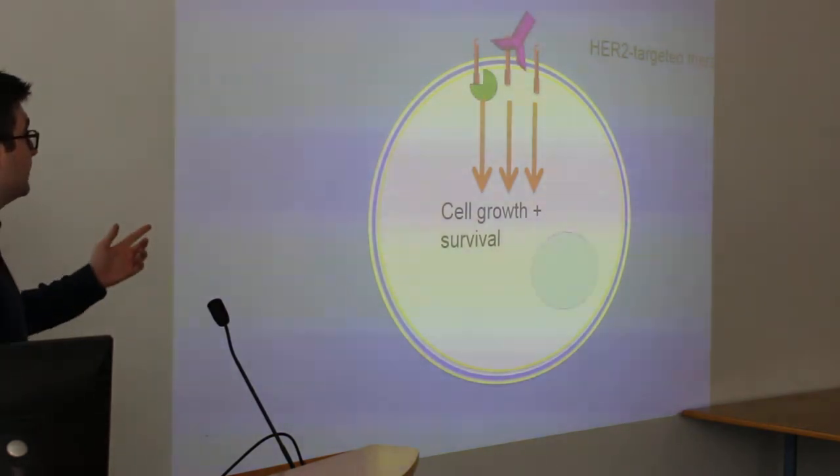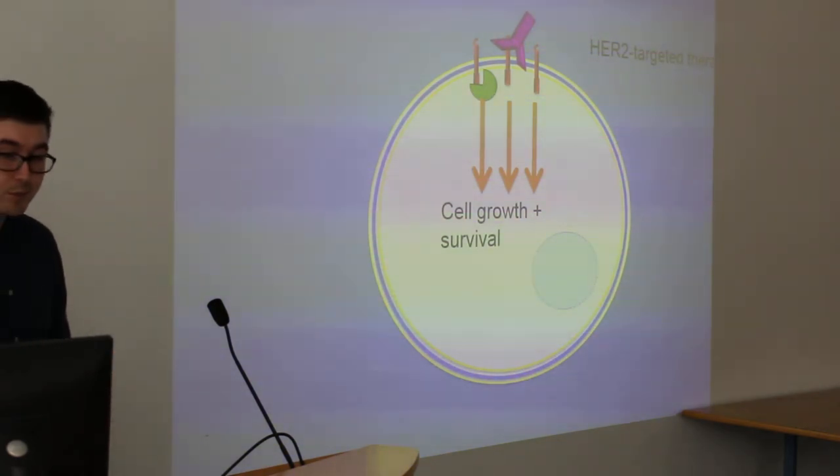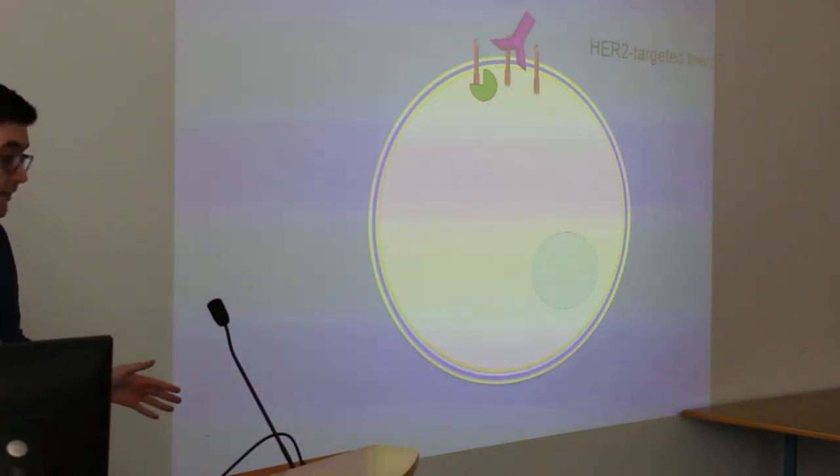Herceptin would bind to the outside and then small molecules like lapatinib and neratinib would bind to the inside. These stop the cell growth signals and cause cell death.